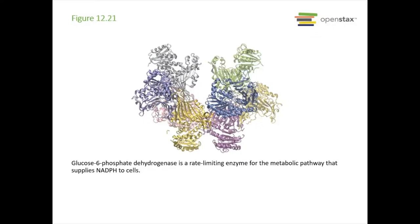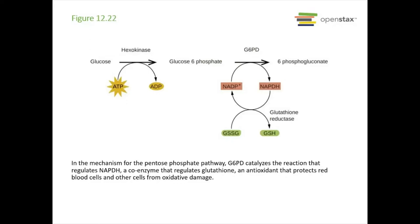Another example of a catalyst are enzymes — enzymes are biological catalysts in our body. One example is glucose-6-phosphate dehydrogenase, a rate-limiting enzyme for the metabolic pathway that supplies NADPH to cells. Basically, glucose forms glucose-6-phosphate, which then helps make 6-phosphogluconate. For the detailed biochemistry, consult your biology or biochemistry resources — that won't be on the chemistry quiz.